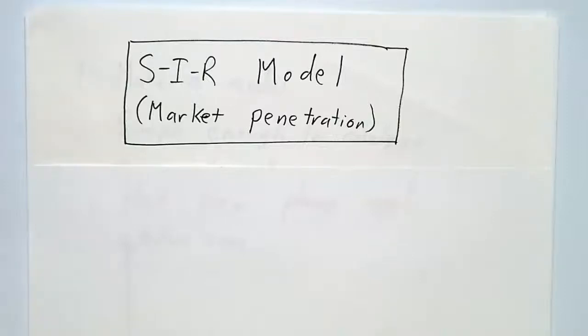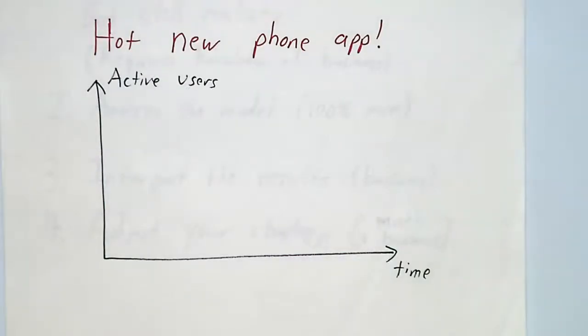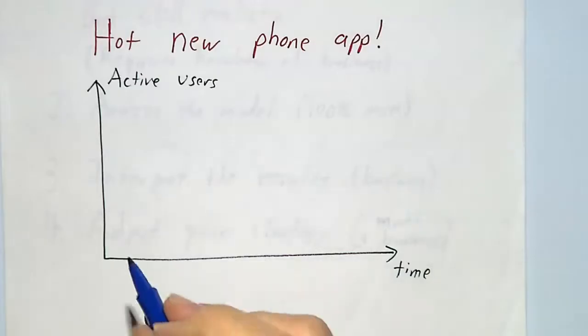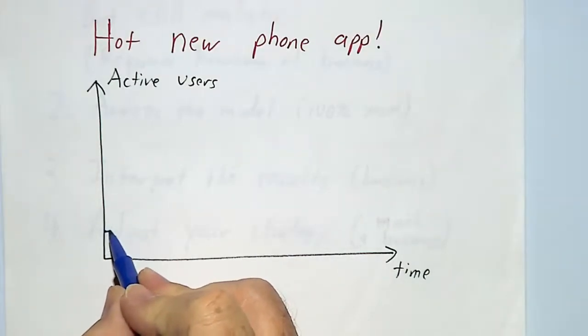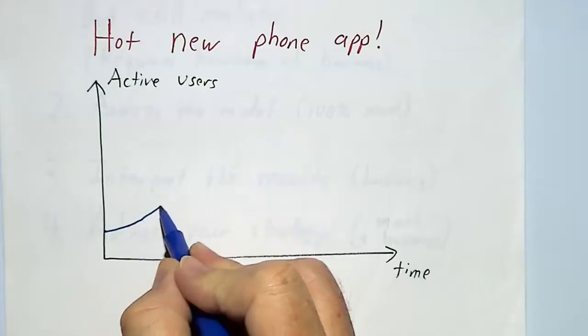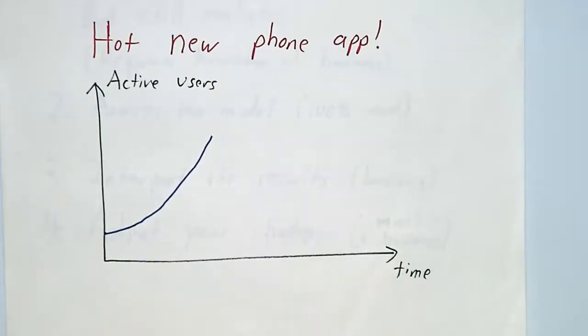In this video, we're going to talk about the SIR model as applied to market penetration. So let's suppose you've just come out with a wonderful new phone app. You want to have lots of users, and you are hoping that your users, as a function of time, just grow and grow — that it goes viral.